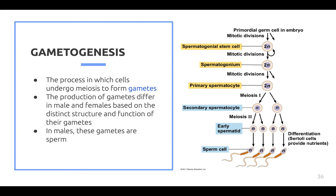Gametogenesis: what is it and where does it occur? Cells need to develop before they become mature gametes capable of fertilization. Recall that gametes are reproductive sex cells — sperm in males. The development of haploid cells into gametes is called gametogenesis. In males, the process that produces mature sperm cells is called spermatogenesis.